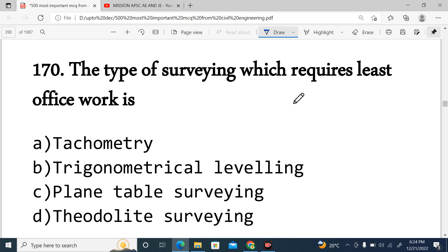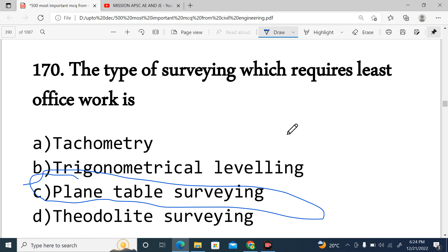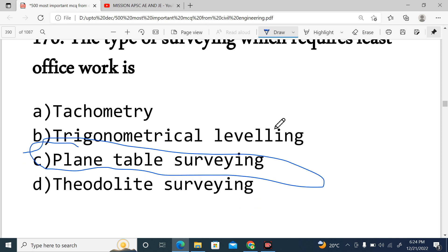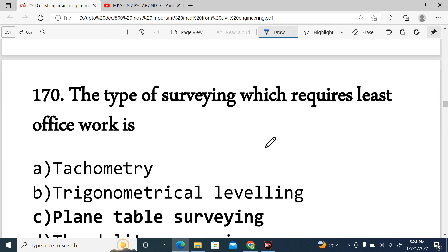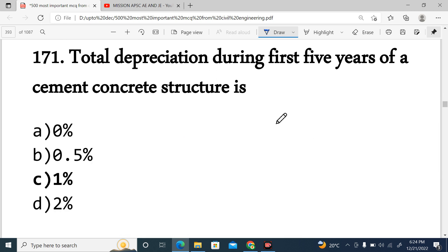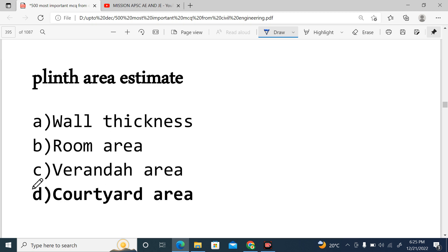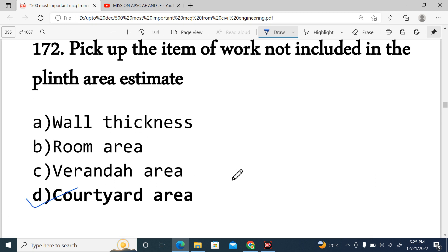Question 170: The type of survey which requires least office work. Obviously, plane table survey requires less office work because in the field, we do the plotting and drawing ready. So plane table office work is less. Option C is correct. Next, Question 171: Total depreciation during first five years of a cement concrete structure - 1 percent. Next, Question 172: Pick up the item of the work not included in the plinth area estimate. Courtyard area, option D, is not used in plinth area estimate. Wall thickness, room area, veranda area - we use these.